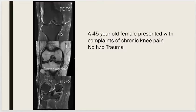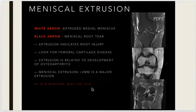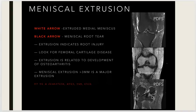This is a case of meniscal extrusion, with the meniscus extending beyond the tibial margin by 6mm. The presence of a meniscal root tear is suggestive of meniscal extrusion. Whenever there is an extrusion, it indicates a root injury — as in this case with the meniscal root tear. Always look for femoral cartilage disease when there is a meniscal extrusion, as it is related to the development of osteoarthritis.